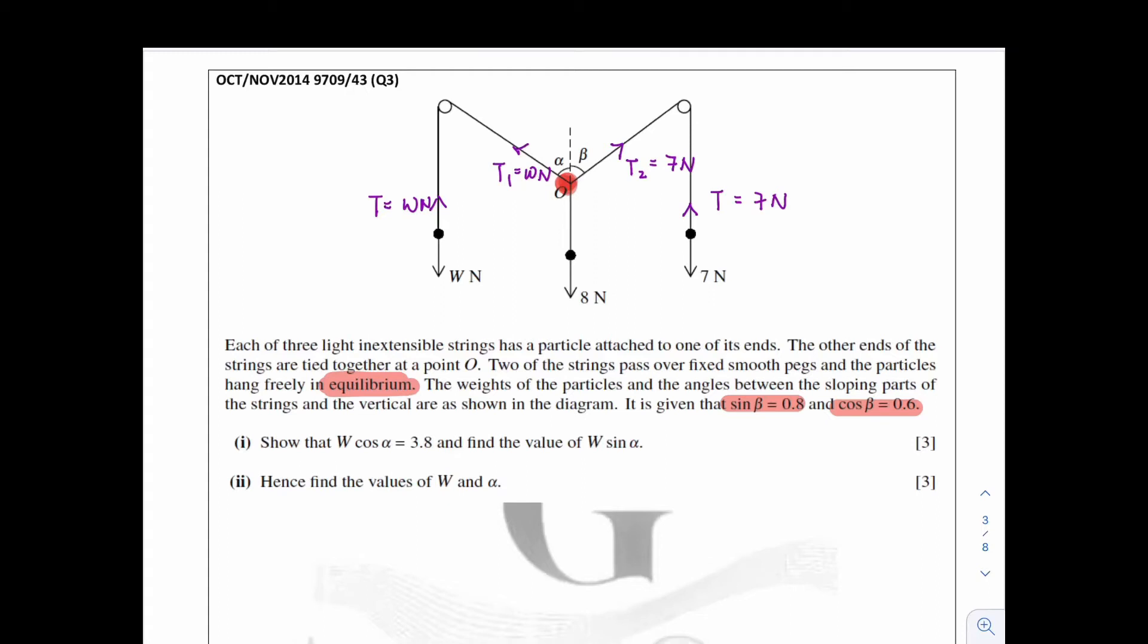After figuring out all the forces, we can start to resolve the forces. Let's resolve for this force first. To resolve for this force, we got to resolve in the x and y direction. For this force, if I resolve in the y direction, it should be going up. If I resolve it in the x direction, it should be going to the right side. So the x component of this force, after resolve, should be 7 sin beta, as the beta is actually here. So the y component should be 7 cos beta.